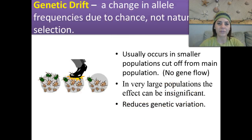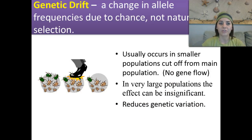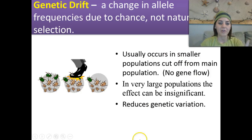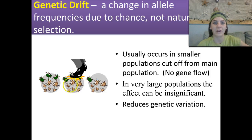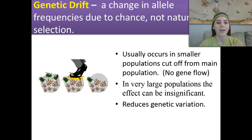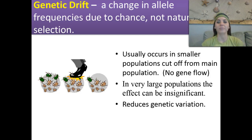Genetic drift is a change in the allele frequencies due to chance, not natural selection — pure chance. For example, a population of beetles, and bam, somebody steps on them and all of a sudden wipes out three of the green beetles, and now only one of them is left. So again, it's due to chance, not natural selection.